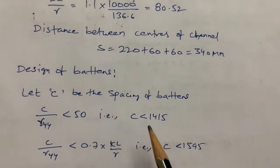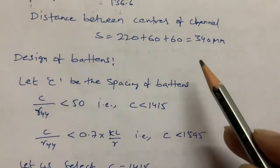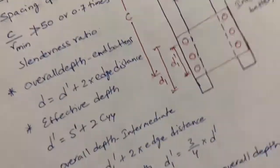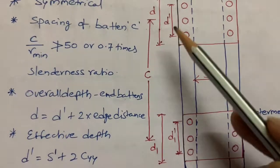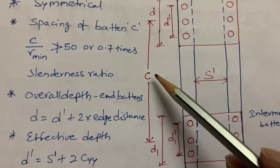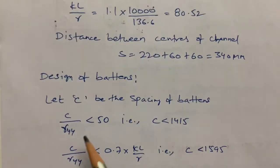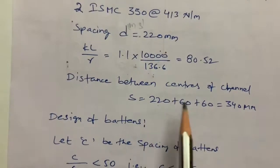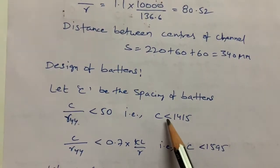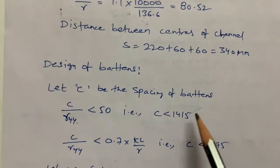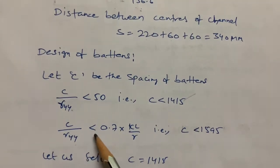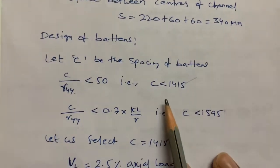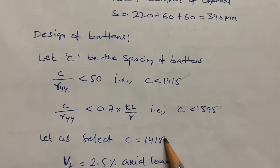Next, we design the battens following IS800:2007 specifications. 'C' is the spacing between battens. The condition is C/r_yy ≤ 50, where r_yy is available in steel tables for ISMC. Using this, I calculate C ≤ 1415 mm. Another condition is C/r_yy ≤ 0.7 × (KL/r). Using both equations, I select C = 1415 mm as the batten spacing.